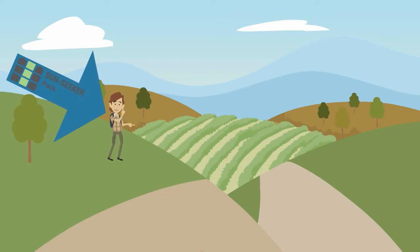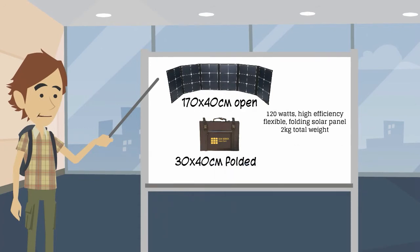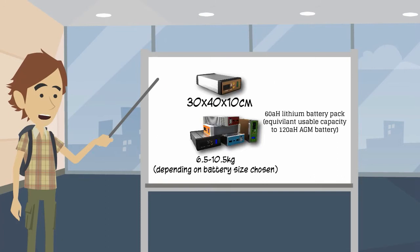it all fits in my little pack and weighs under 10 kilograms. Inside the waterproof pack is a flexible, folding 120-watt solar panel and a high-powered lithium battery pack with loads of features.